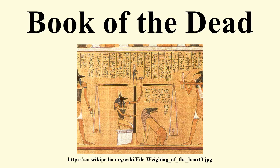The Book of the Dead developed from a tradition of funerary manuscripts dating back to the Egyptian Old Kingdom. The first funerary texts were the pyramid texts, first used in the pyramid of King Unas of the 5th dynasty, around 2400 BCE. These texts were written on the walls of the burial chambers within pyramids, and were exclusively for the use of the pharaoh. The pyramid texts were written in an unusual hieroglyphic style; many of the hieroglyphs representing humans or animals were left incomplete or drawn mutilated, most likely to prevent them from causing any harm to the dead pharaoh.